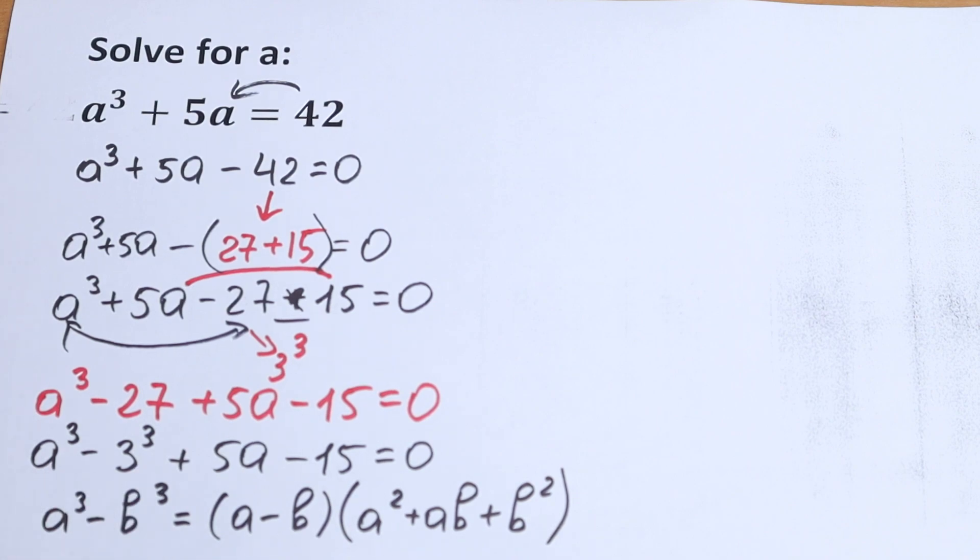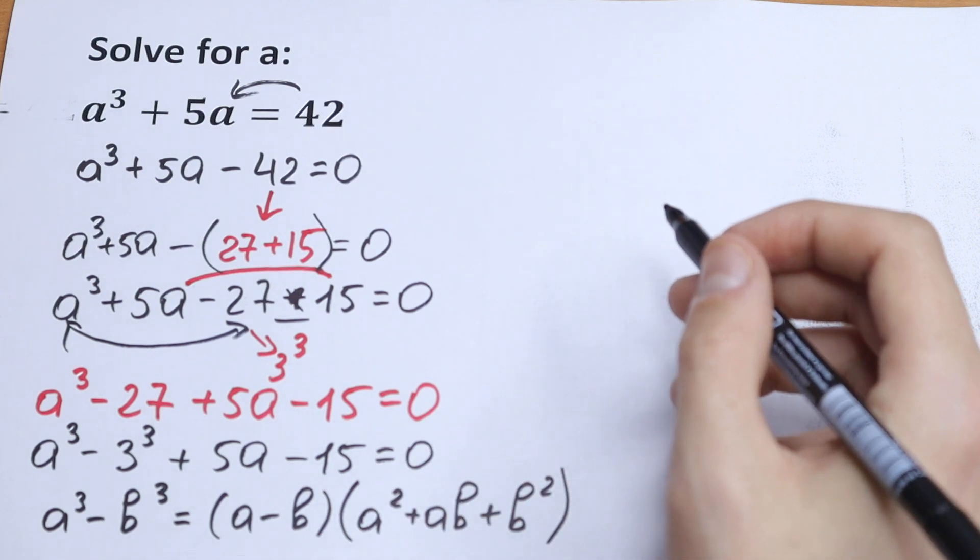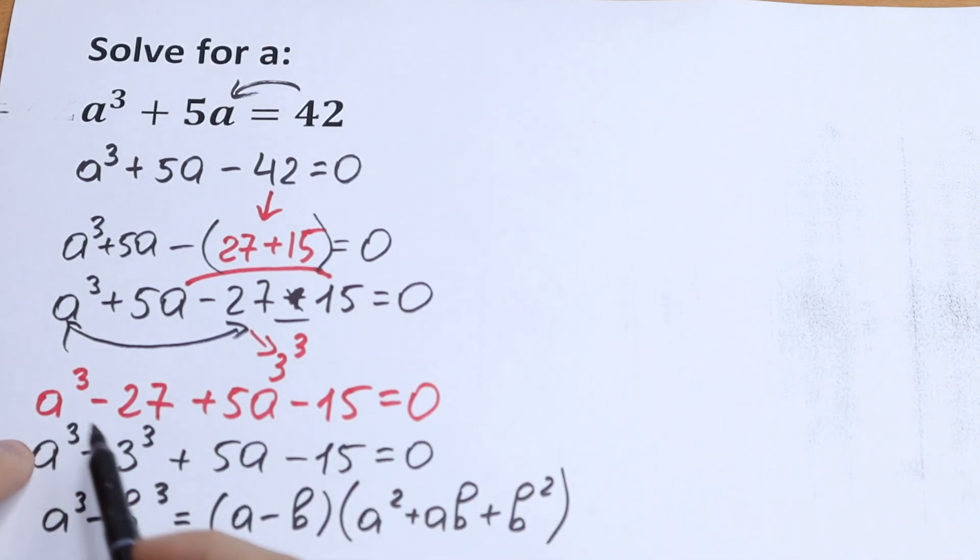We can use this formula right here. And of course, we have 5a minus 15 and right here we can factor out 5. And as a result we will have in our parentheses a minus 3, which we need from here. And then we factor out all common a minus 3. So let's write the formula, difference of cubes, a³ minus 3³.